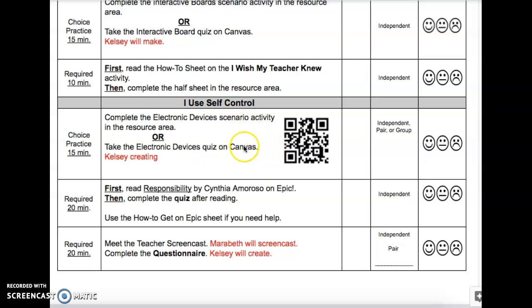Or you can take the electronic device quiz on Canvas. Okay. So those are your two options. The QR code is going to go with the quiz. You can do this independent with a pair or a group.